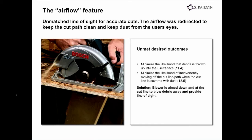By focusing on other unmet needs, they developed more innovations. Two important unmet outcomes were: minimizing the likelihood that debris is thrown into the user's face when making a cut, and minimizing the likelihood of inadvertently moving off the cut path when the line is covered with dust. When pushing the saw along a cut path, sawdust builds up on the line and covers it — you reach over to blow it off, causing problems. So Bosch redirected the airflow from the saw to push dust off the cut line, bringing it around the blade and shooting it down behind the user toward the ground, away from the user's face.